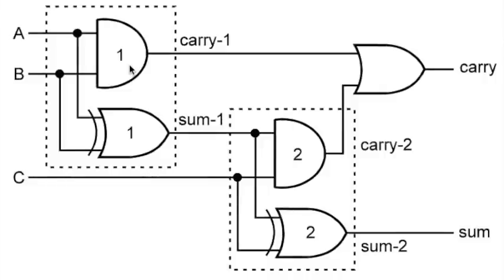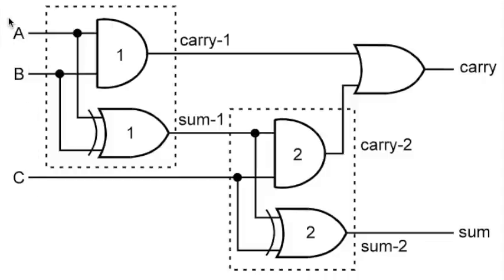This is the circuit of a full adder, which consists of two half adders — half adder number one and half adder number two. The output of the first half adder is cascaded with the next half adder. Every half adder has two inputs A and B, so one input is connected to the sum output of the first half adder, and the second input is taken as C. So the full adder has three inputs: A, B, and C.